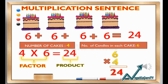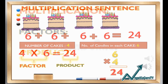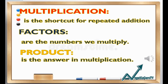In the addition sentence, 24 is called the sum, while in the multiplication sentence, it is called the product. You can also write it in a vertical way: 6 times 4 equals 24. This means that multiplication is the shortcut for repeated addition. The factors are the numbers we multiply, while the product is the answer in multiplication.